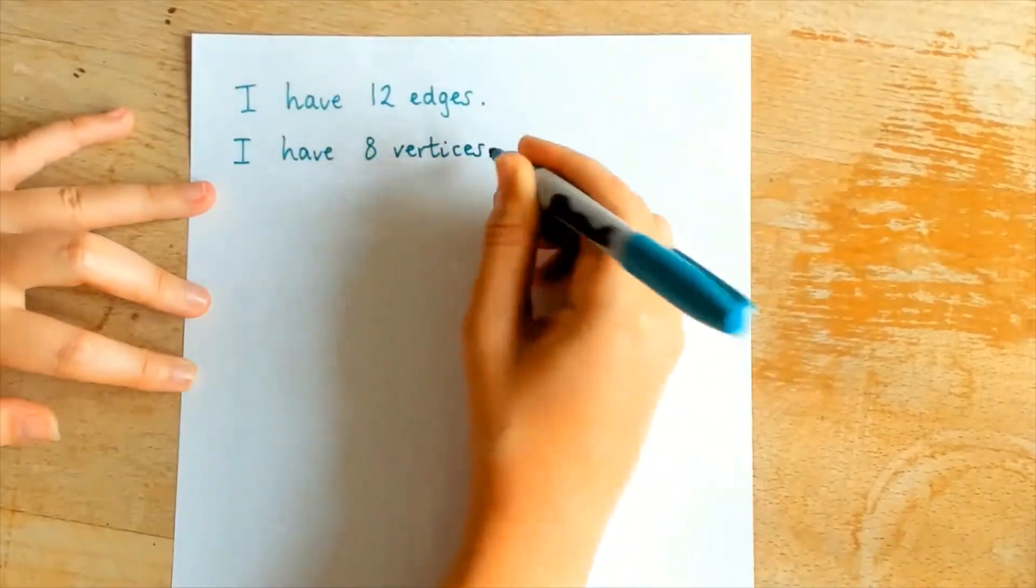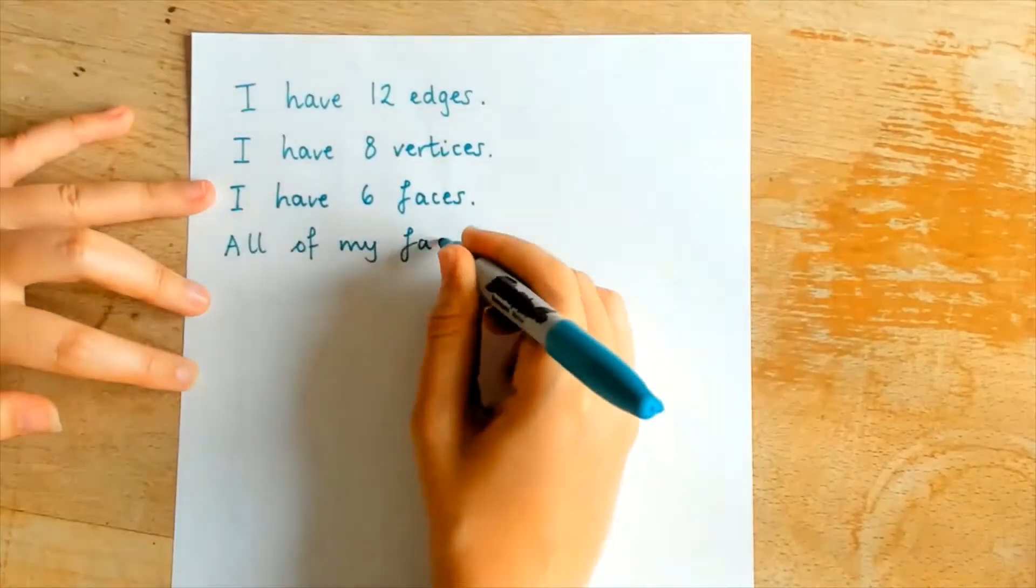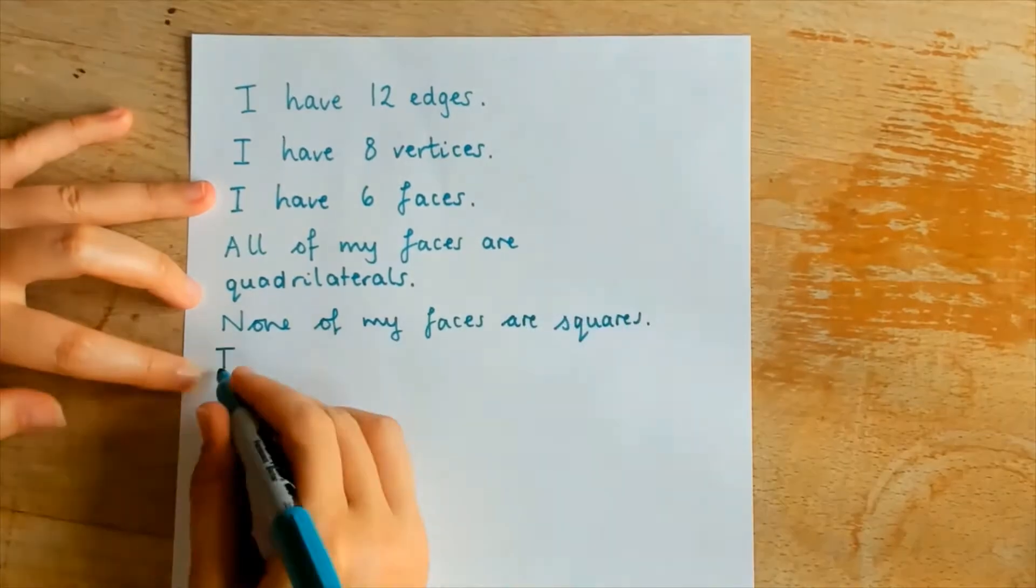After they are finished, could they use the properties they have named to create a 'which 3D shape am I' riddle and share it with the class.